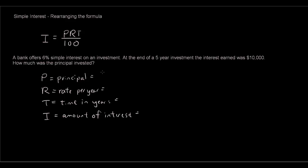So we don't have the P. Do we have the rate? Yes, 6% per annum. Actually in the question it should say per annum. Time in years, it's five years, and the amount of interest is 10,000.